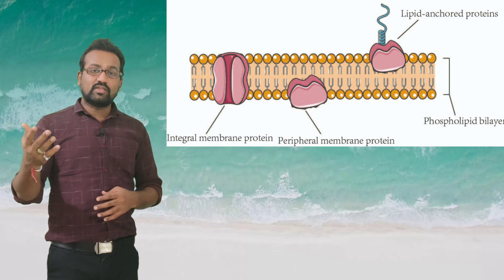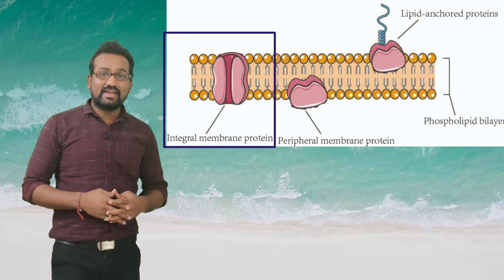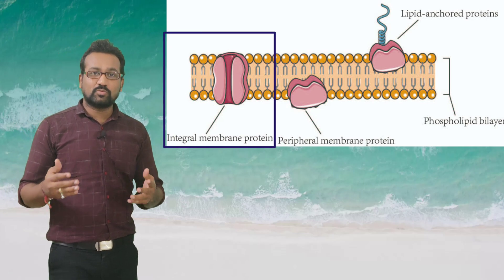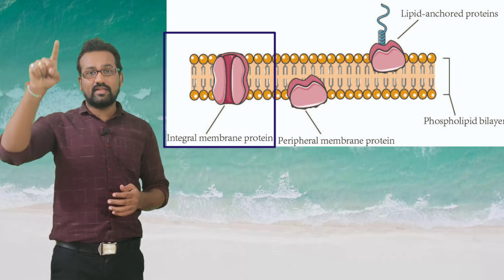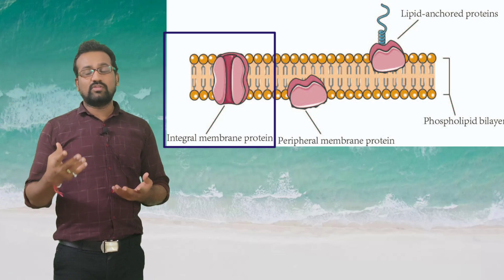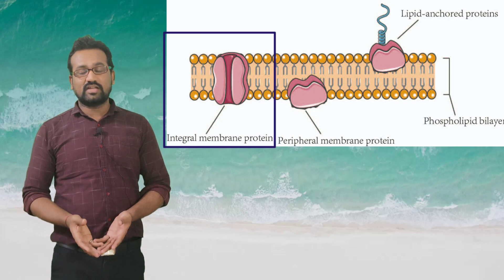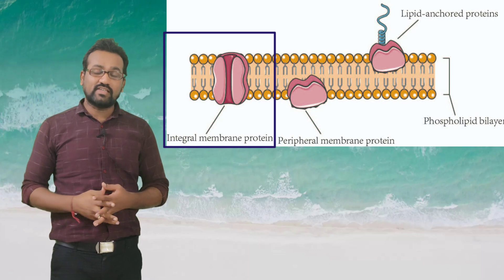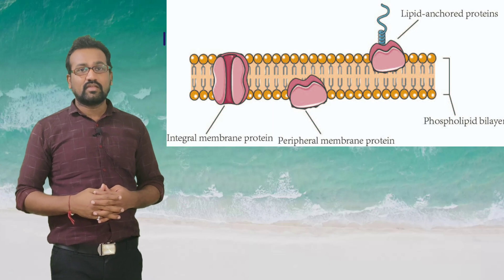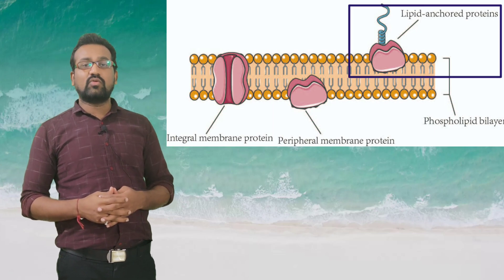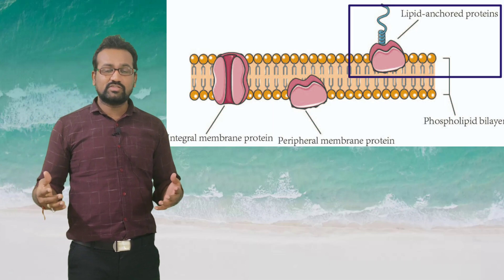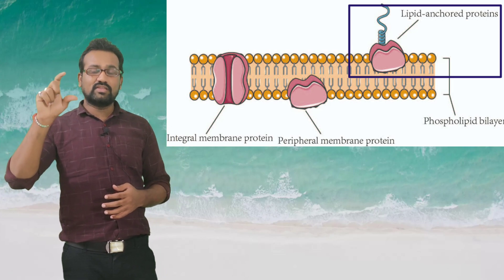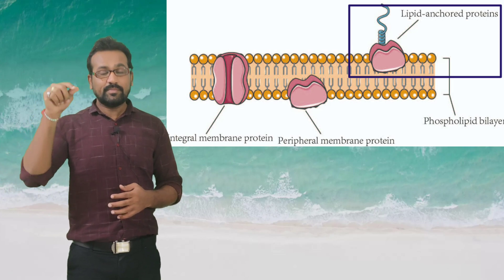Another type of protein present in the membrane is the integral protein. Integral proteins are those that have traversed the membrane throughout — one side faces the internal cytosol and the other side faces the outer, external surface of the membrane. The third type is known as anchored proteins, meaning these proteins are anchored in the membrane with the help of lipids — a lipid anchor.